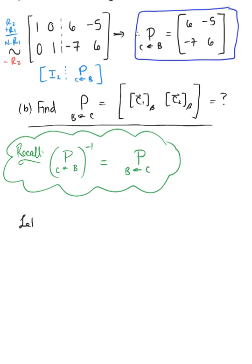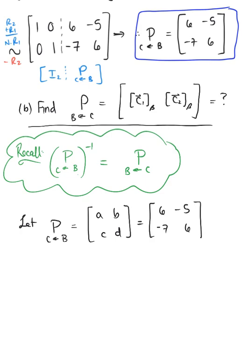Let the change of coordinates matrix from basis B to basis C be the 2×2 matrix with entries A, B, C, D. We just found this: it is [[6, -5], [-7, 6]]. We can use the standard 2×2 matrix inverse formula to find the inverse.